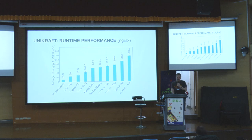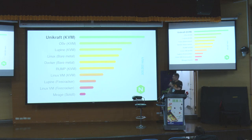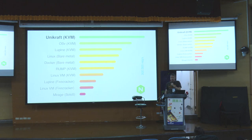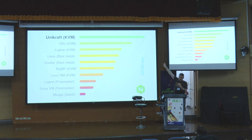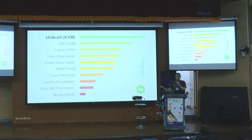Runtime performance — I think we outperform everything else by far. These are different unikernels, also Linux, Docker, and so on. This is the request per second on Nginx — we can serve around 300,000 requests per second compared to Linux on bare metal, which is almost half. So with a single Unicraft instance, you can have the same performance as you would have with two instances of Linux.